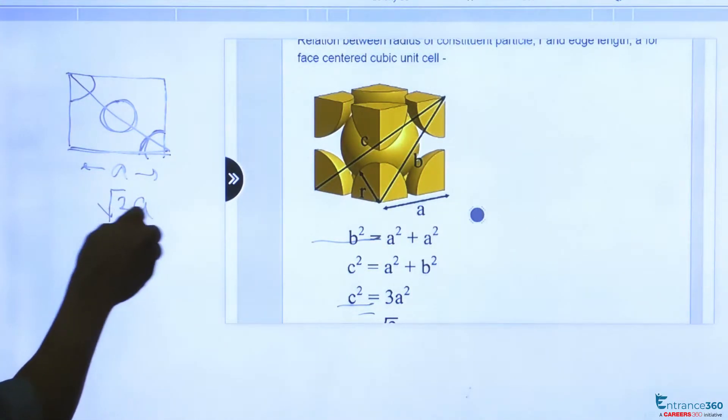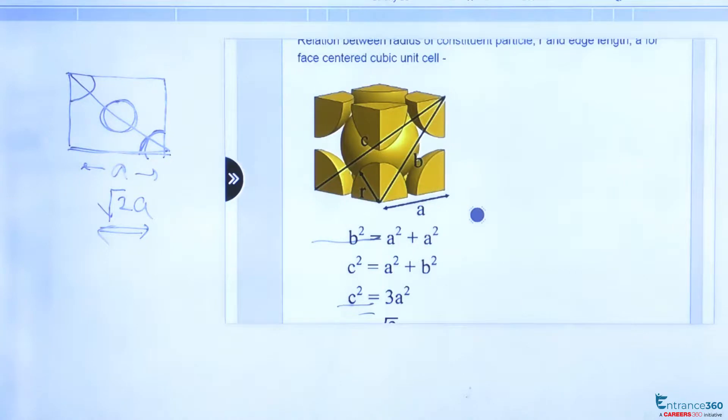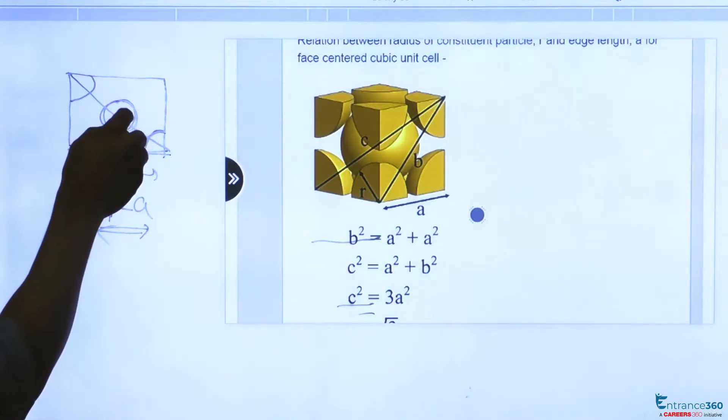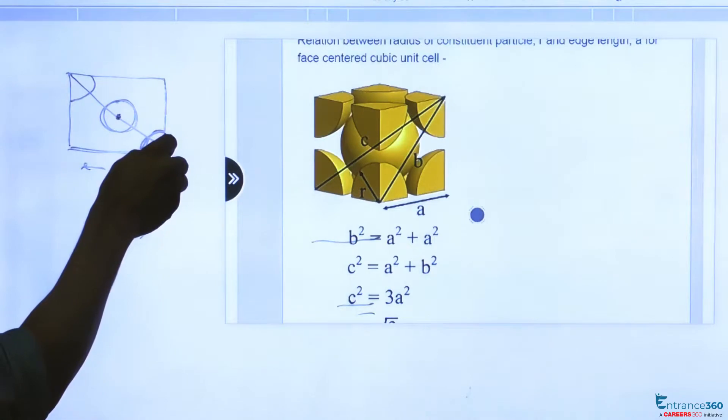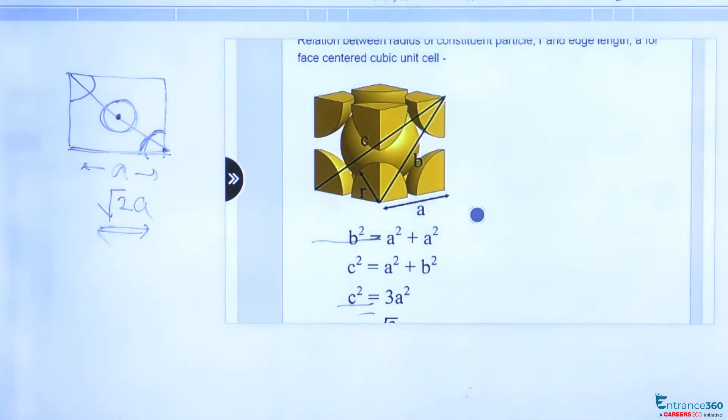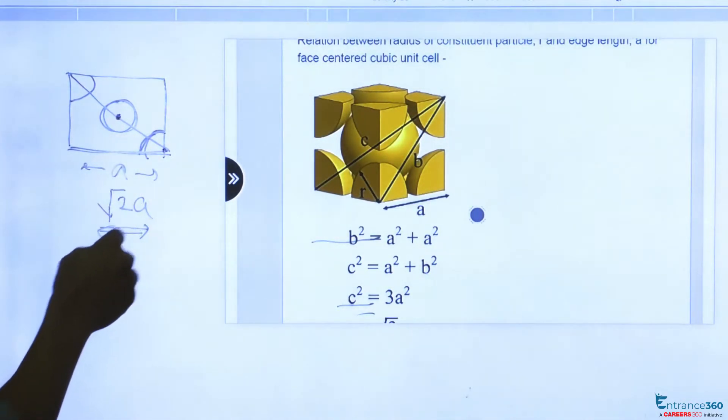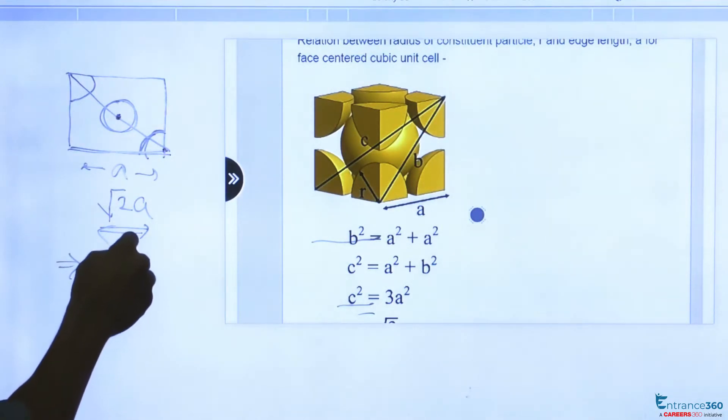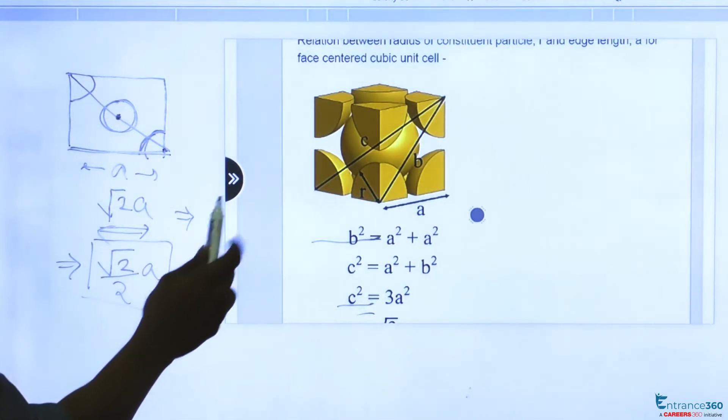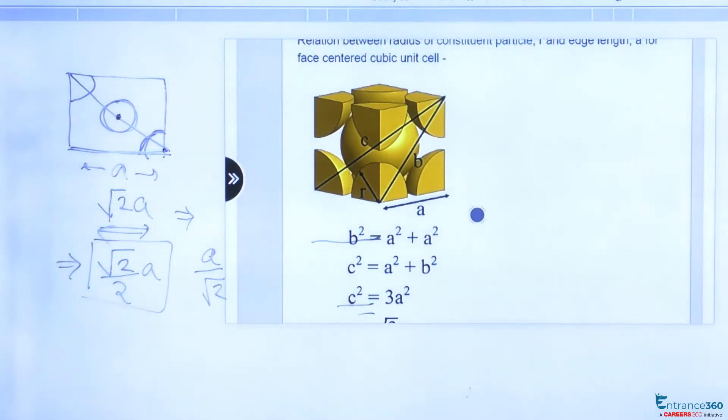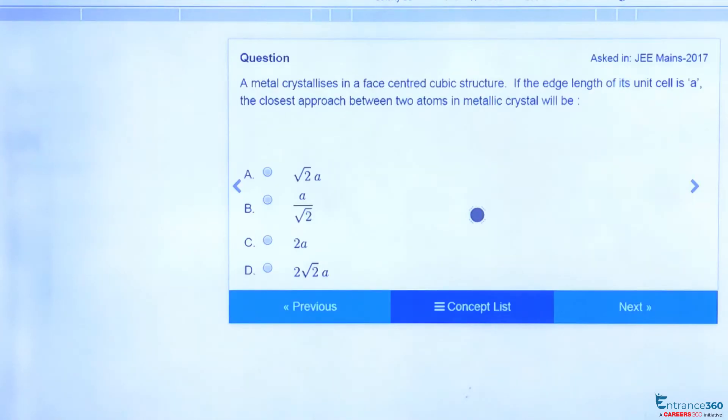We have to find the distance between the center of this circle and the center of this atom, so this will be simply divided by 2, which will give us a/√2. This will be the closest distance between two atoms in FCC structure. So our correct option is a/√2, which is our option B.